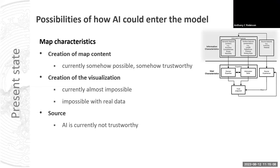How can we use AI in this model — in this process of trust judgment? We can talk about map characteristics related to creation of map content. Currently, AI is possible to create map content and it is somehow trustworthy. The other part is creation of visualization — currently this is almost possible, but impossible with real data. From the point of view of the source, AI is currently not trustworthy.